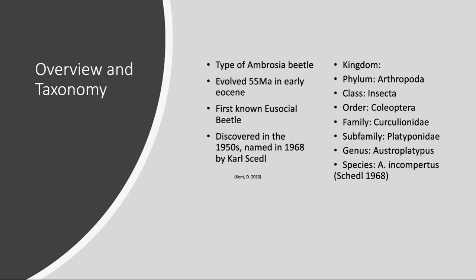Ambrosia beetles are divided into two main subfamilies: Scolytinae, or bark beetles, and Platypodinae, or pinhole beetles. Austroplatypus incompertus belongs with the pinhole beetles.